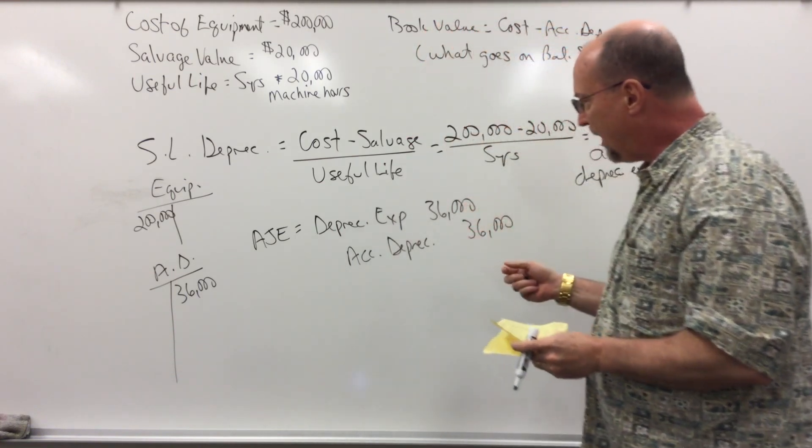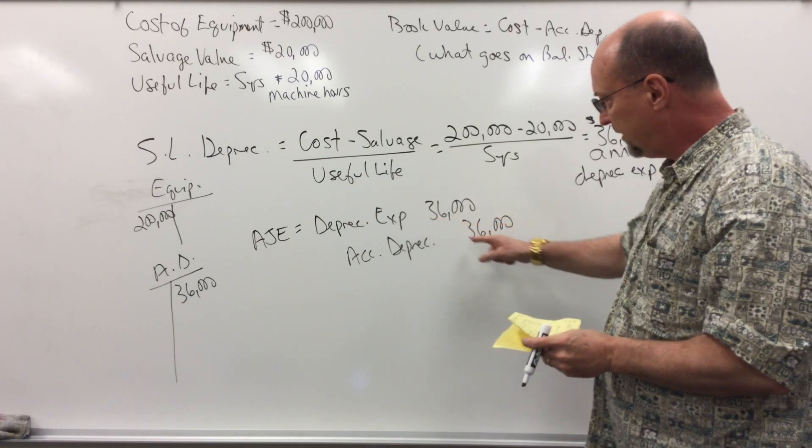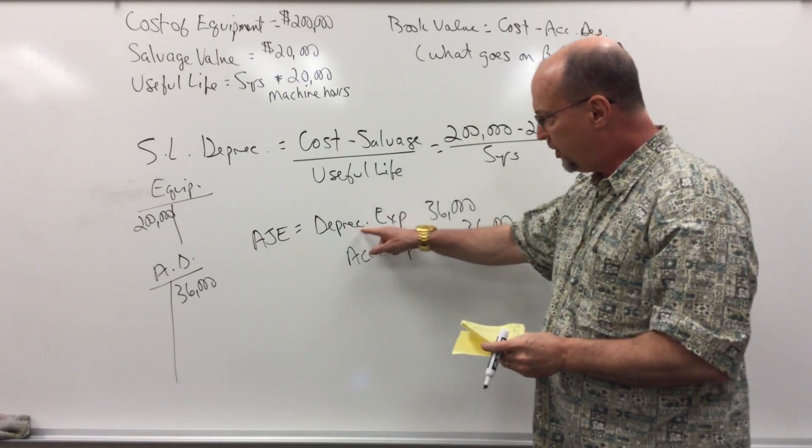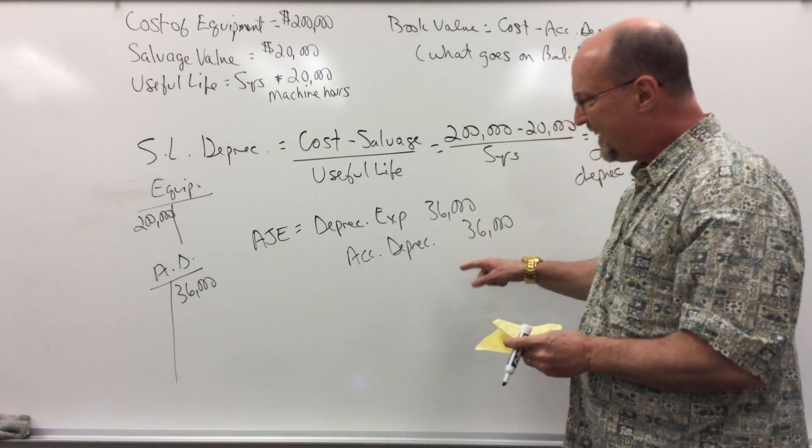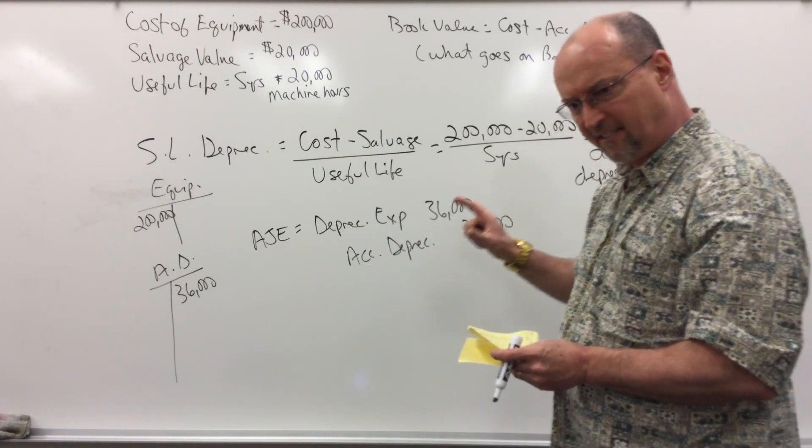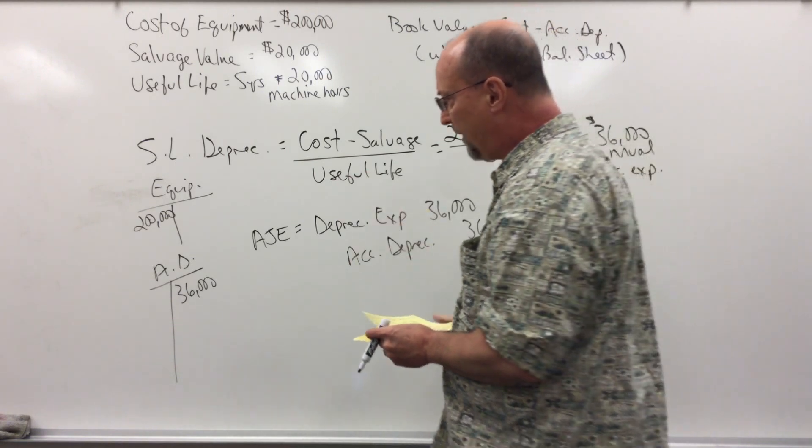Every year, for five years, we're going to record $36,000 in depreciation expense. The depreciation expense goes on the income statement, the accumulated depreciation is a contra-asset on the asset side of the balance sheet, and it reduces the book value.